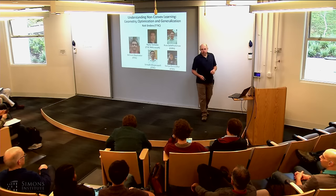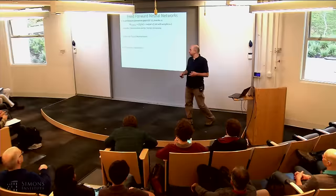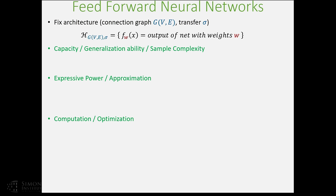What I'm going to talk about is trying to understand deep learning — really, learning with a specific hypothesis class. On the surface it seems very simple: we have a hypothesis class of all functions representable using some architecture. We have a graph defining our architecture and some transition function. We have a fixed graph, all we can set is the weights, and every setting of the weights gives us some function, defining the hypothesis class. We pick a hypothesis from this class based on data.